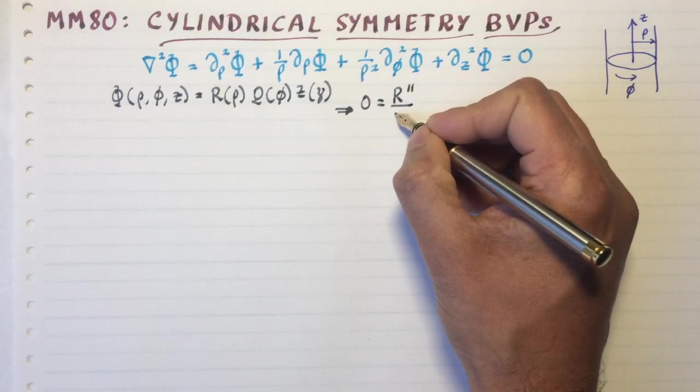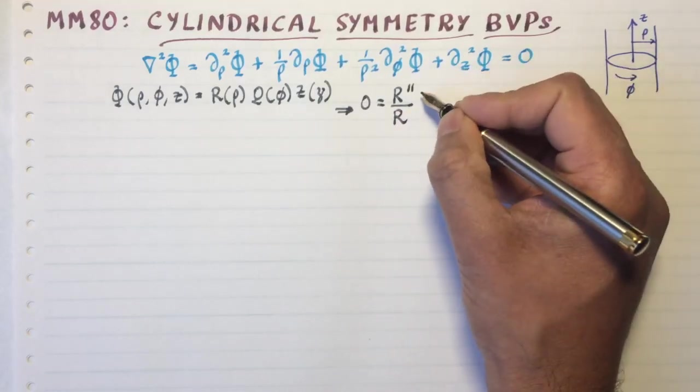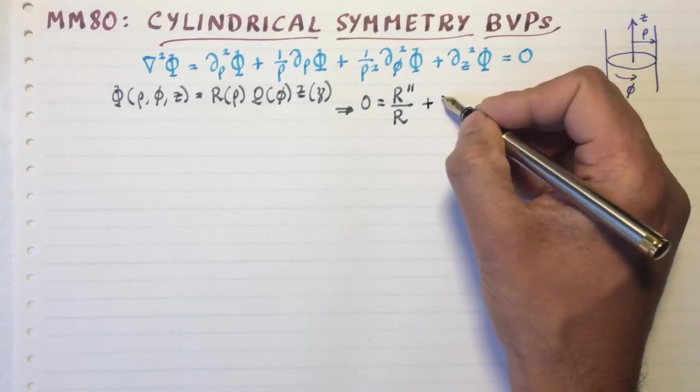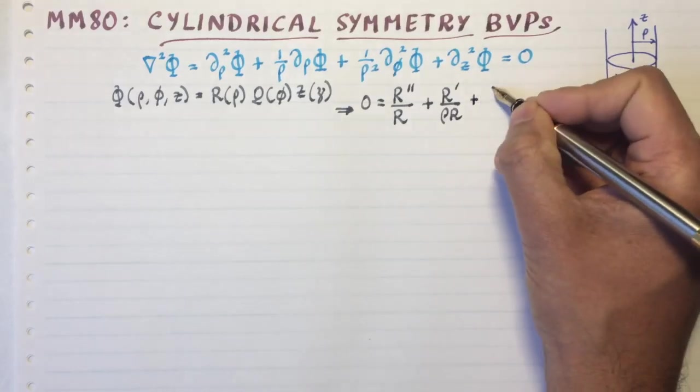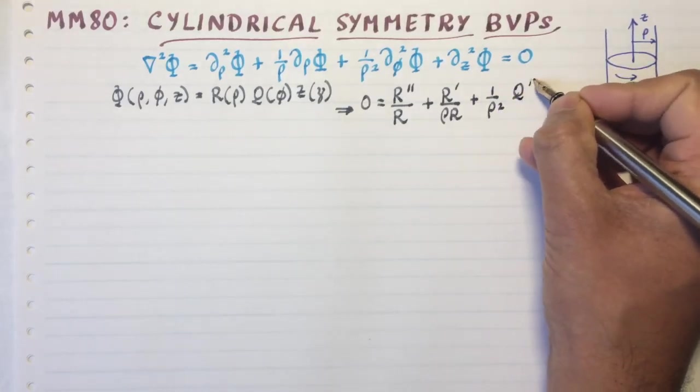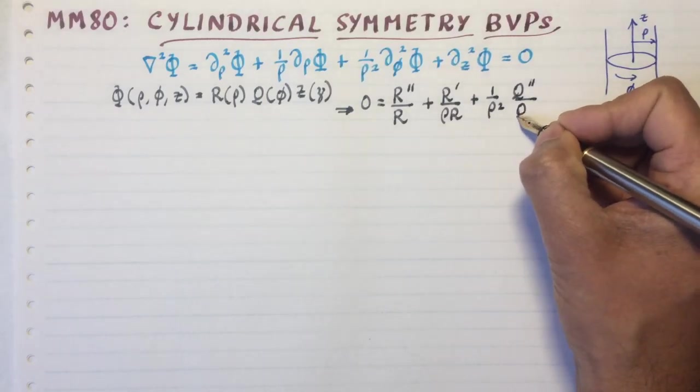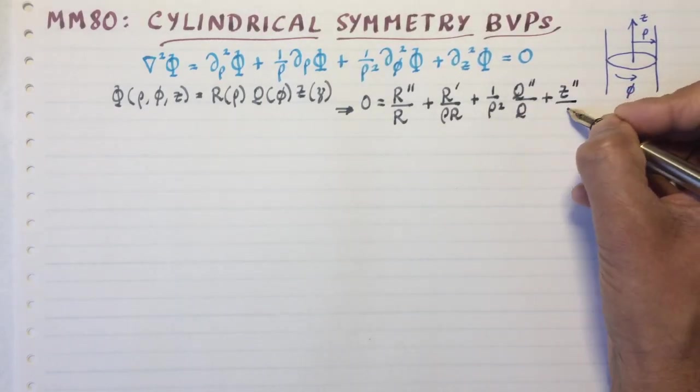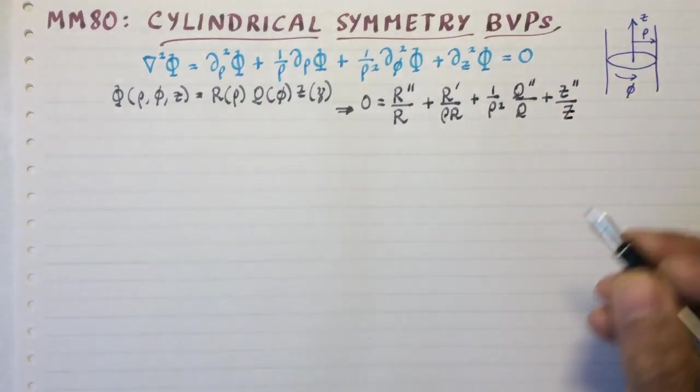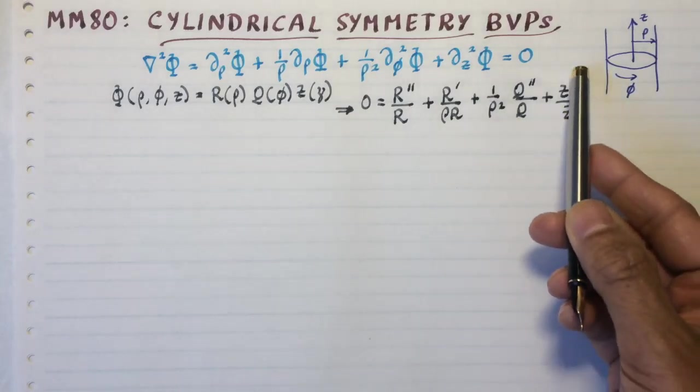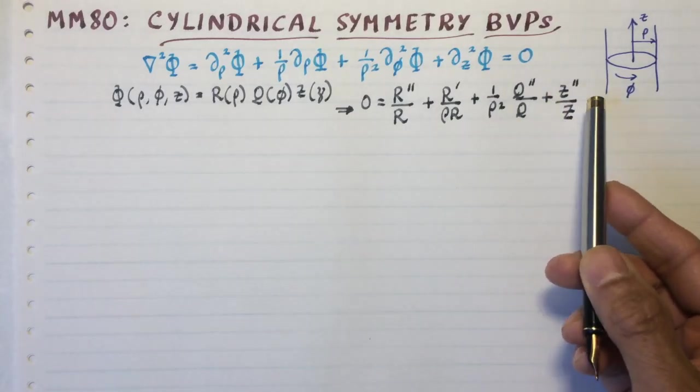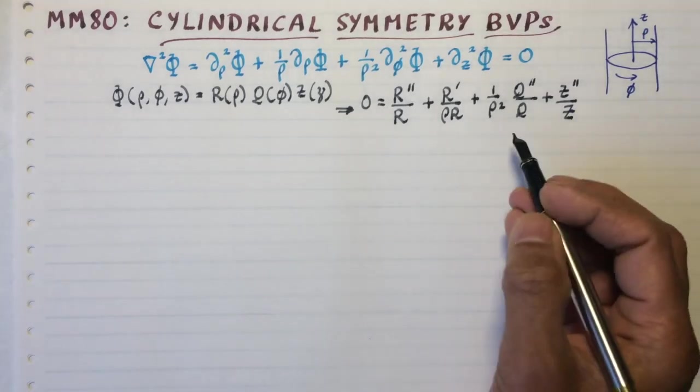Here primes denote the derivative with respect to the arguments. So that's with respect to ρ, for example. And then if I write Q double prime, it's probably with respect to φ. And Z double prime is derivatives with respect to the z coordinate. Now immediately you see that in this situation, you cannot, you can say that this is probably a function only of z and separate that, but it's not a very useful thing to do that. It's more useful, you can do it like that, but it's better to multiply the whole thing throughout by ρ squared.